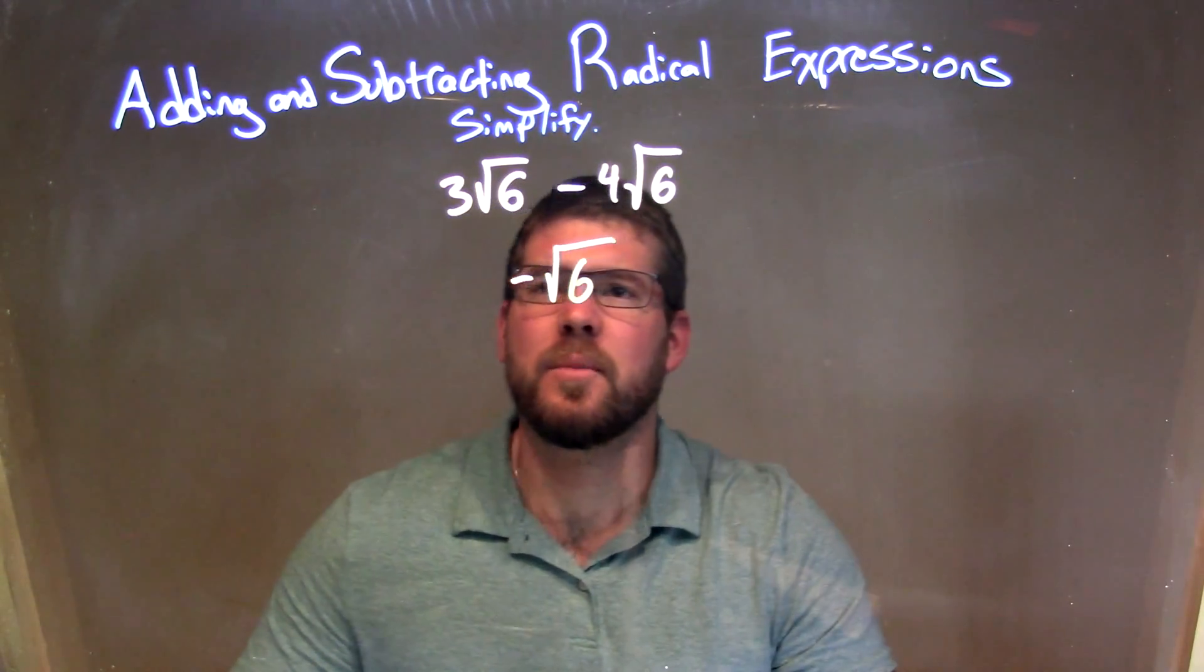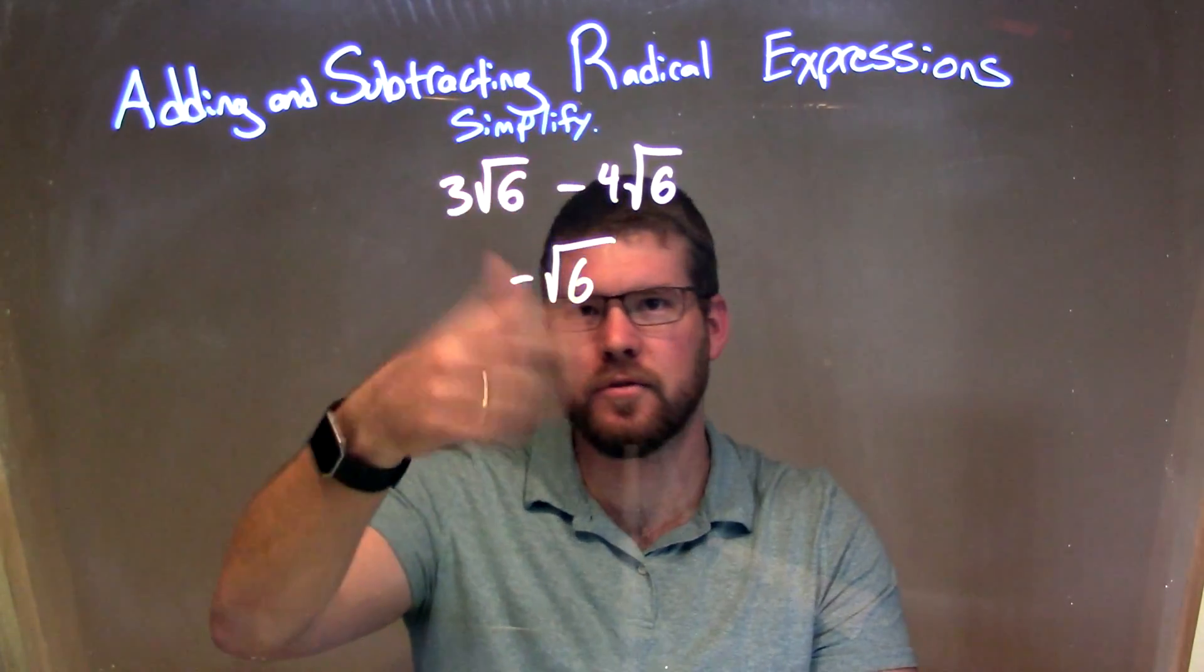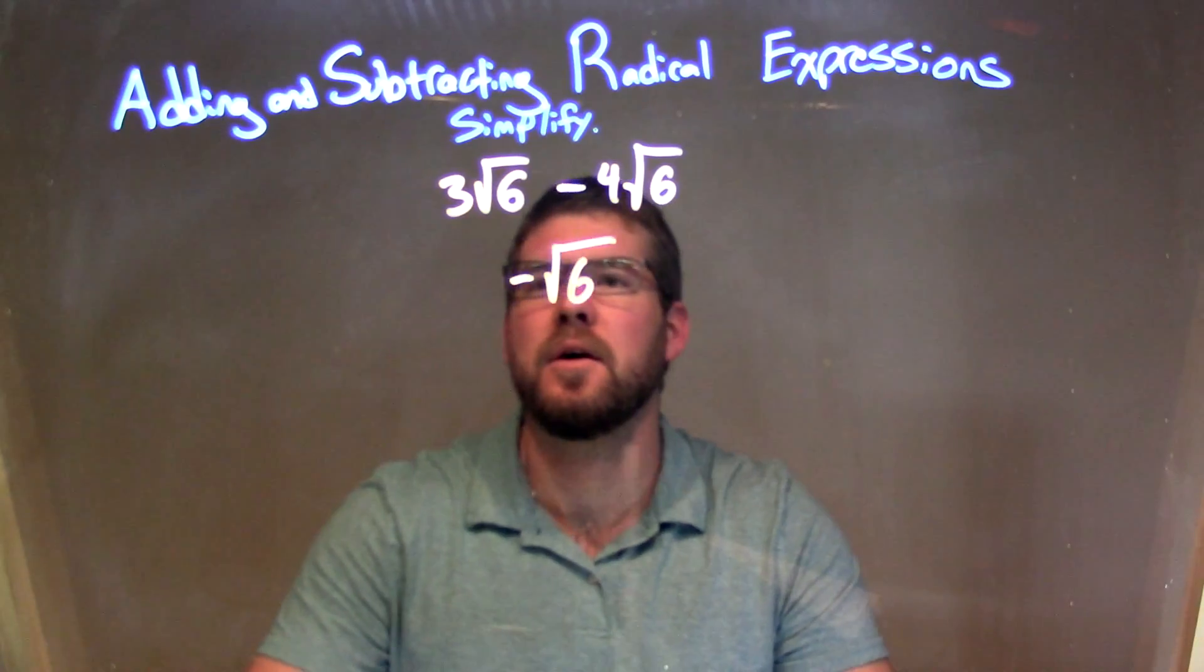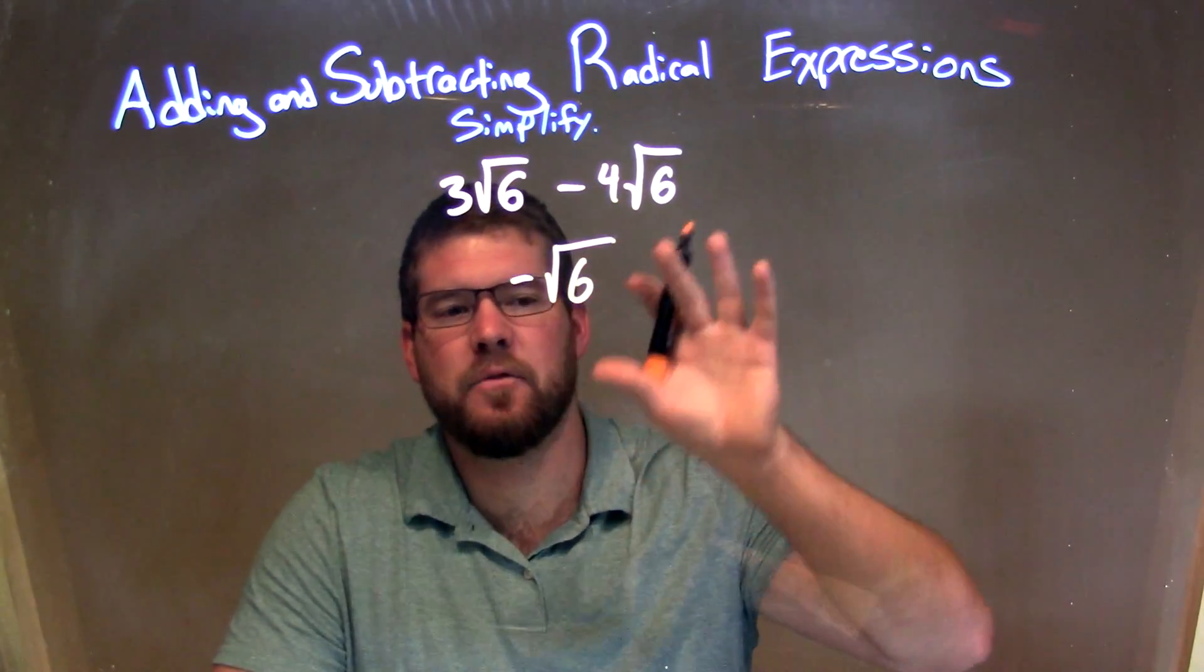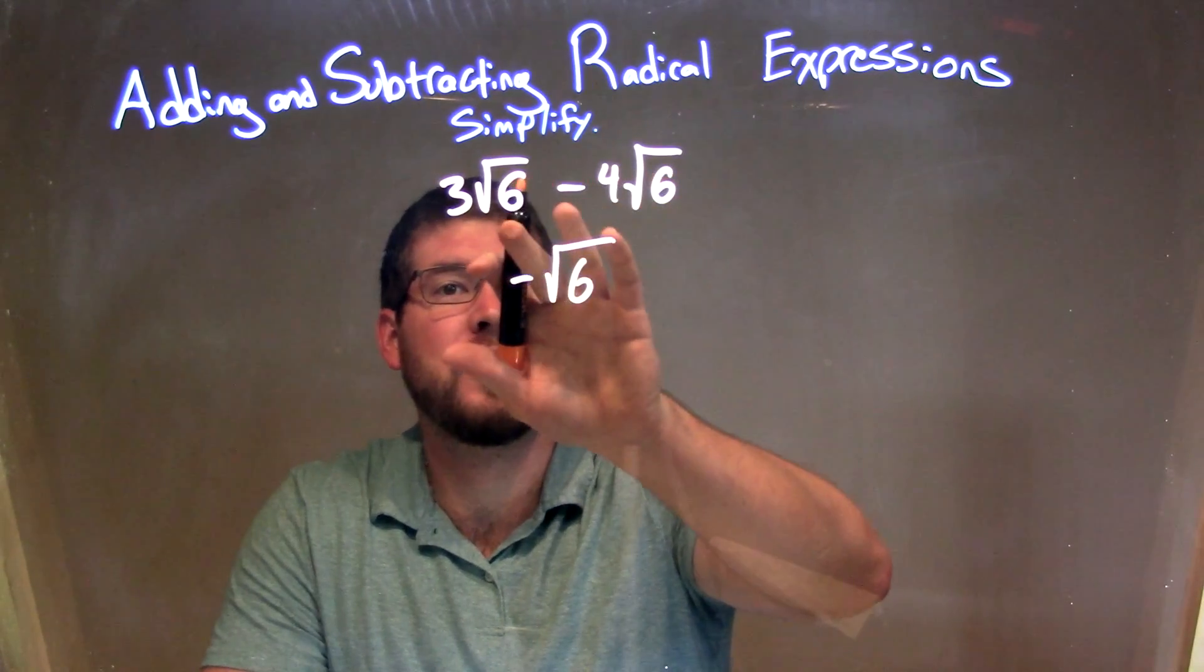So this one's pretty simple, but if you imagine the square root of 6 is almost like an x, I know it's not, but 3x minus 4x would be negative x, so it would be done. But it's not just a variable, it's a set value, but they're the same.